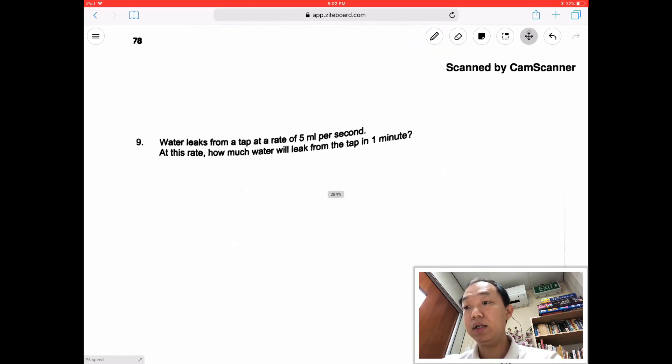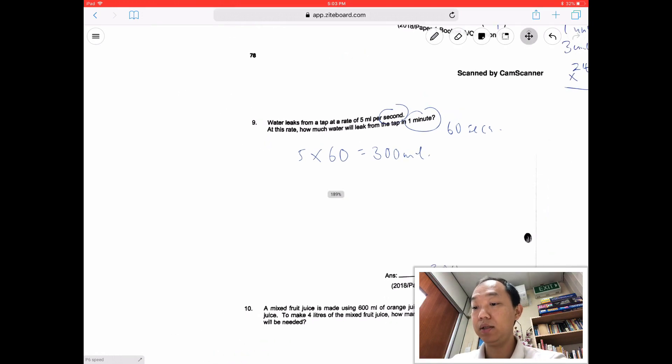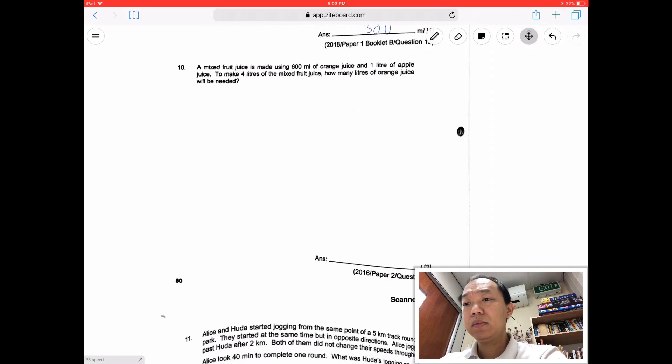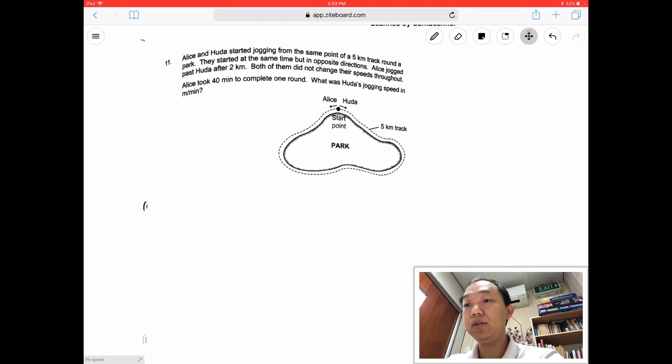Next one, water leak. This is something like a rate question. So 2018, last year, let's take a look. So water leaks from a tap at a rate of 5 ml per second. So 1 second, 5 ml, 1 minute, there are 60 seconds. So what we do is, we take 5 times 60. That will give me 300 ml. So the answer is 300.